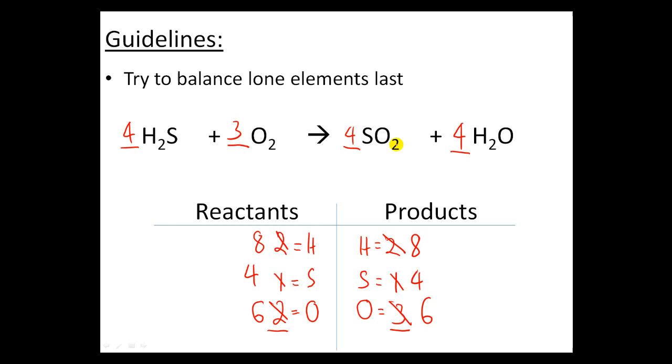But now I've changed my oxygens. 2 times 4 is 8. 8 plus 4 is 12 oxygens. So the only way to make this into 12 oxygens is if I erase the 3 and put in a 6 instead. So now 2 times 6 equals 12.